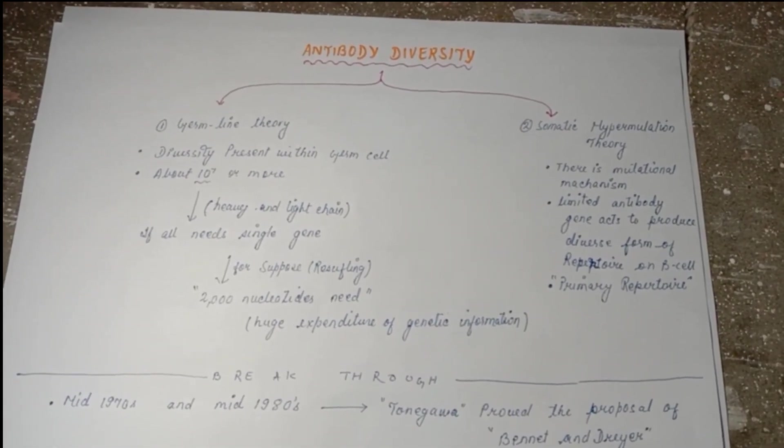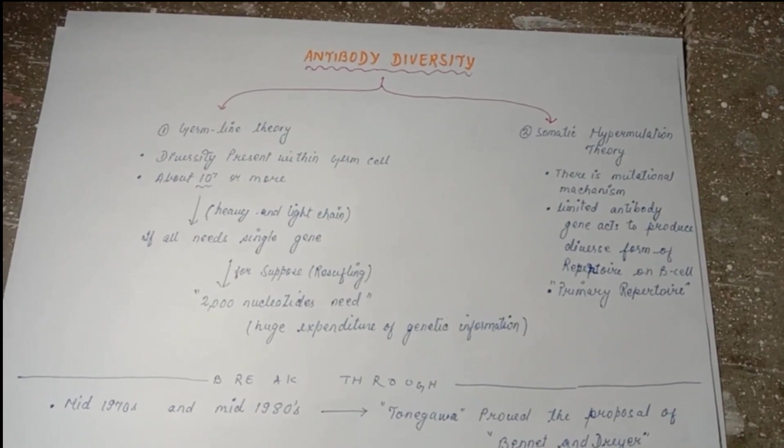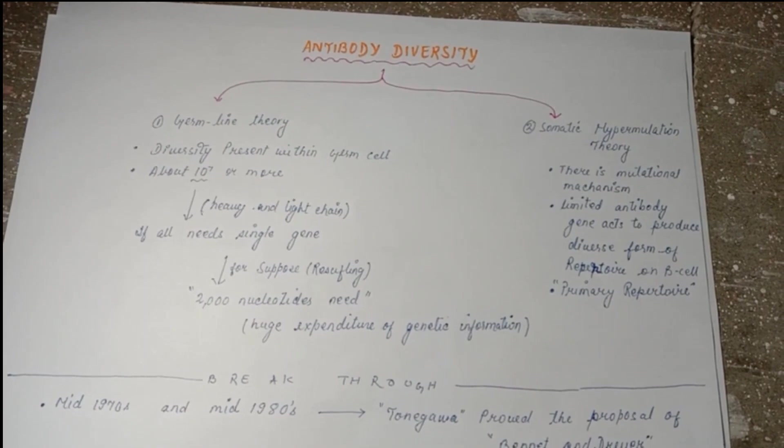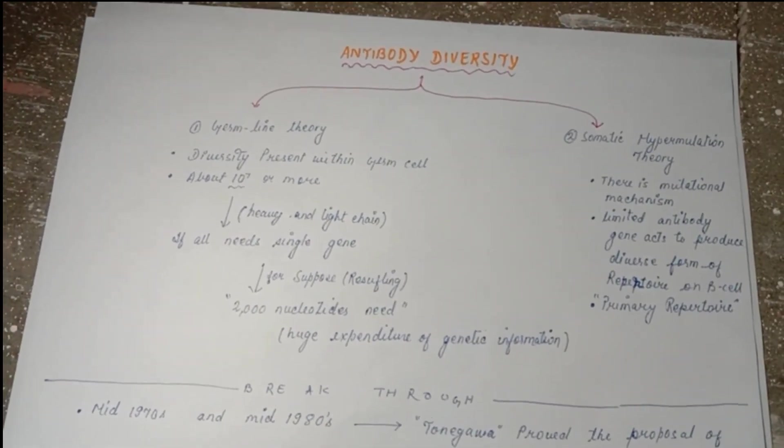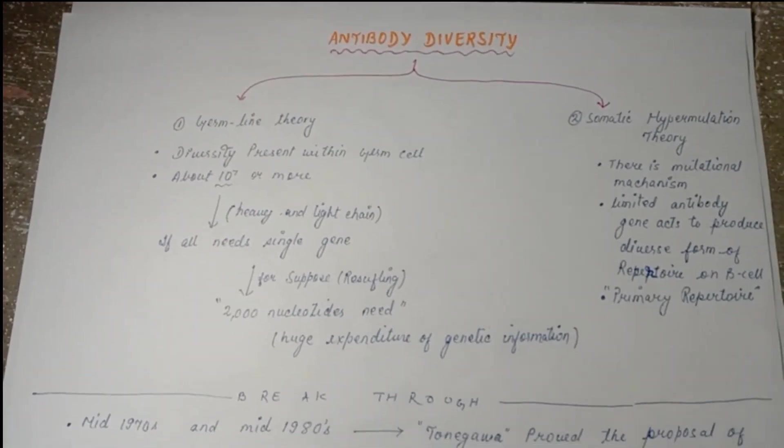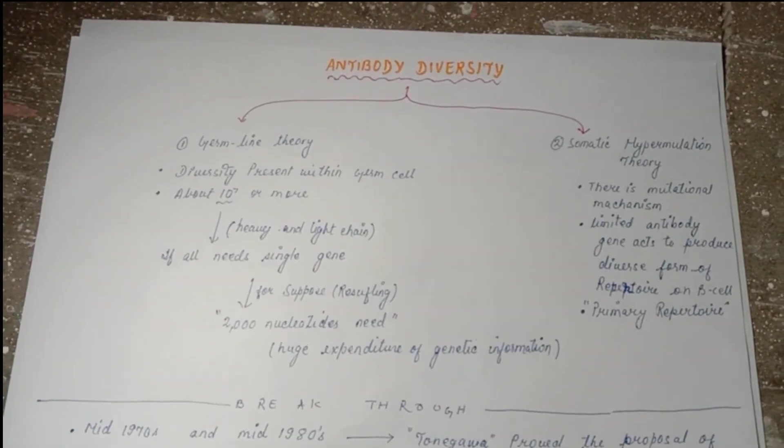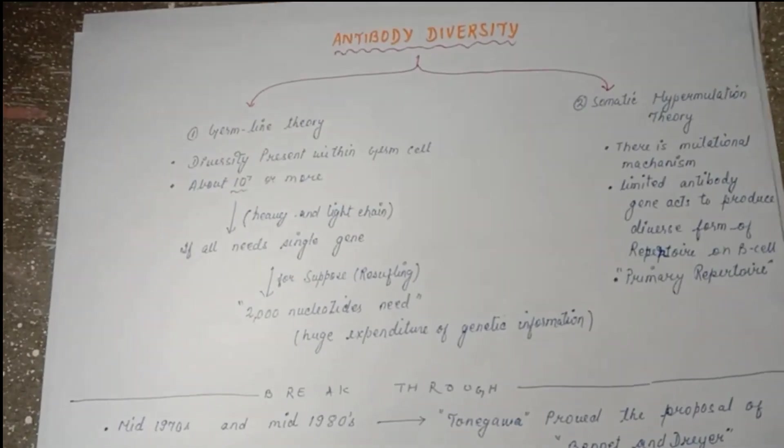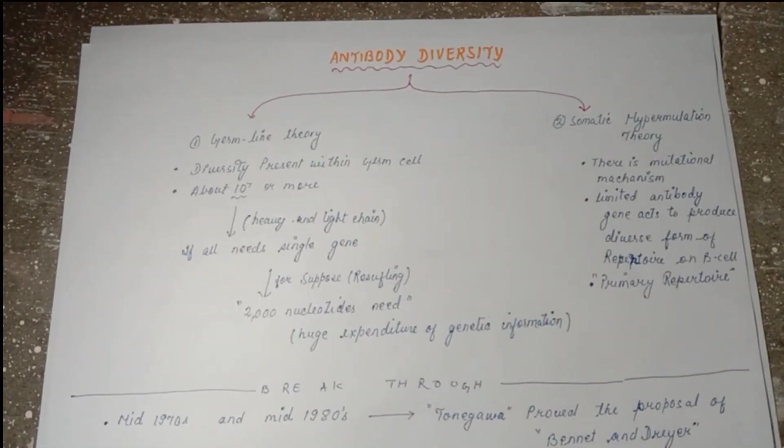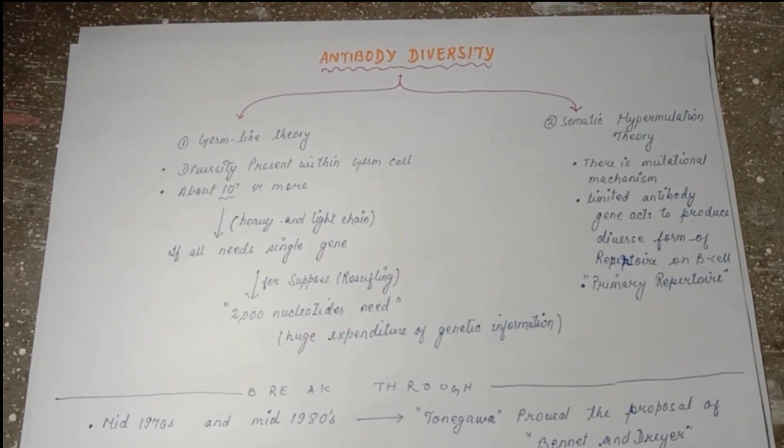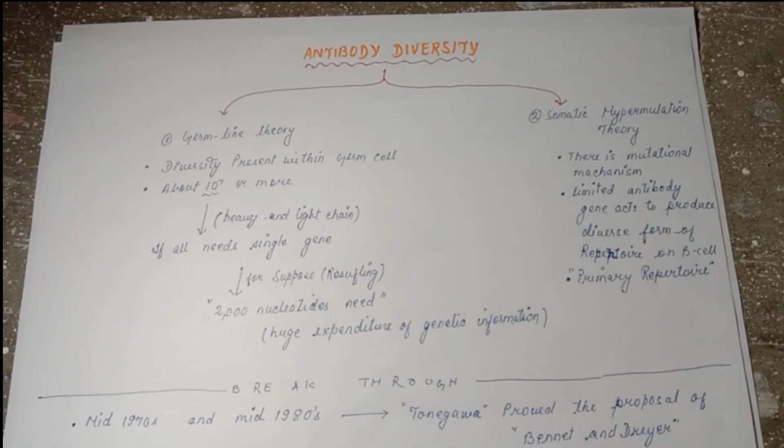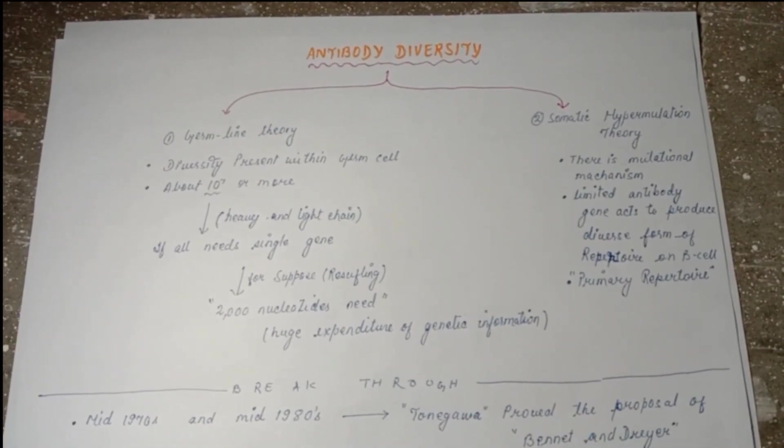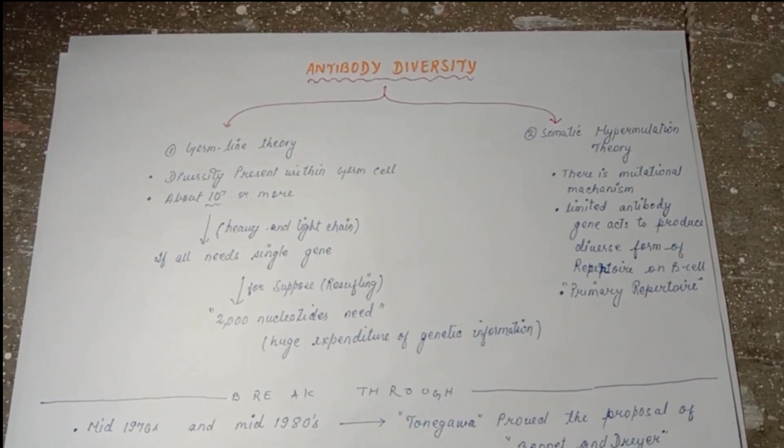It needs a huge expenditure of genetic information, which is a heavy expenditure. Any kind of living organism, the biological system is very much smart in itself. Energy conservation and the use of energy is very judicious, so we can't expend that much energy for only antibody formation. So this germline theory is not much accepted.